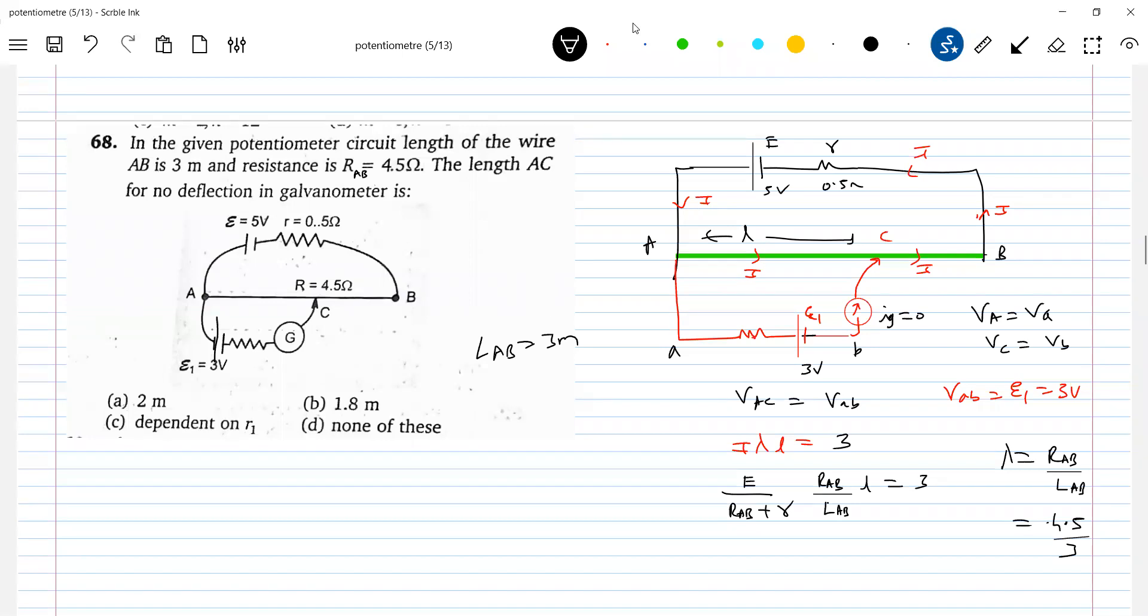So let's substitute all the values. This will be 5, RAB 4.5, this will be 0.5, RAB 4.5, and this will be 3.